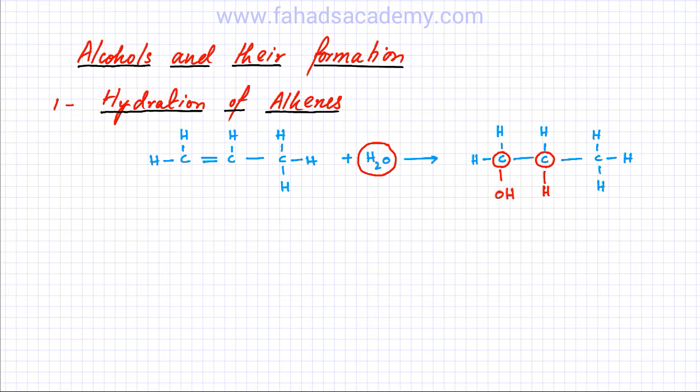And that's how an alcohol is formed. And the conditions for this reaction were that you needed a phosphoric acid catalyst, H3PO4 was required as a catalyst. Plus the pressure for this reaction was 60 atmospheres. And the temperature for this reaction was 300 degrees Celsius centigrade. That's the formation of alcohols by hydration of alkenes.